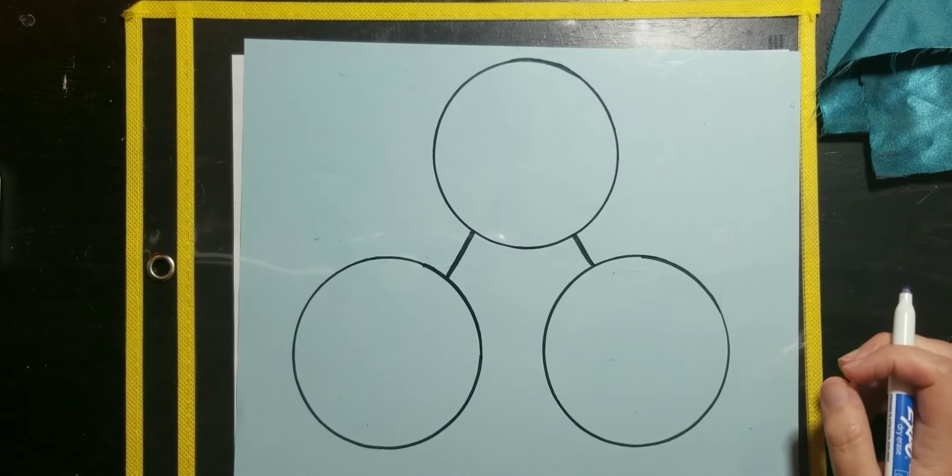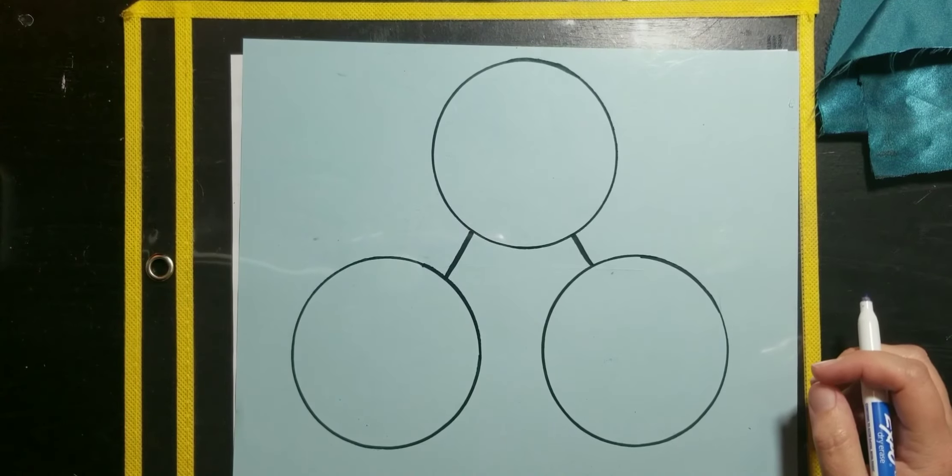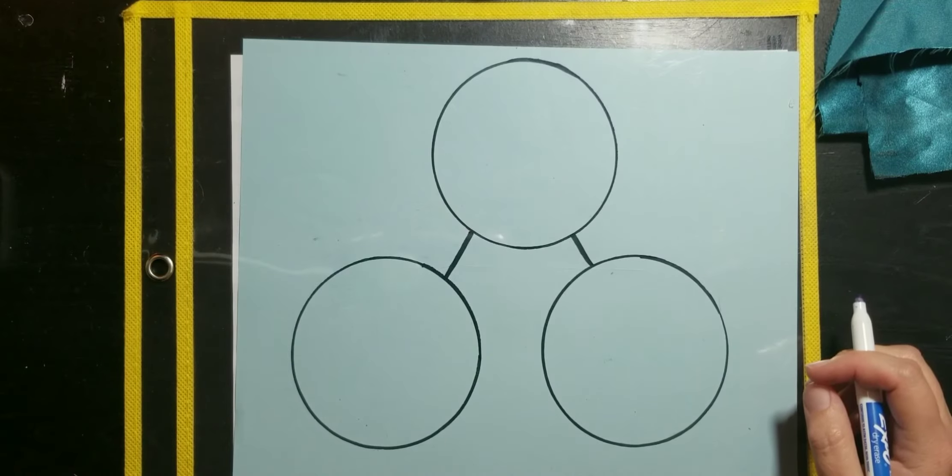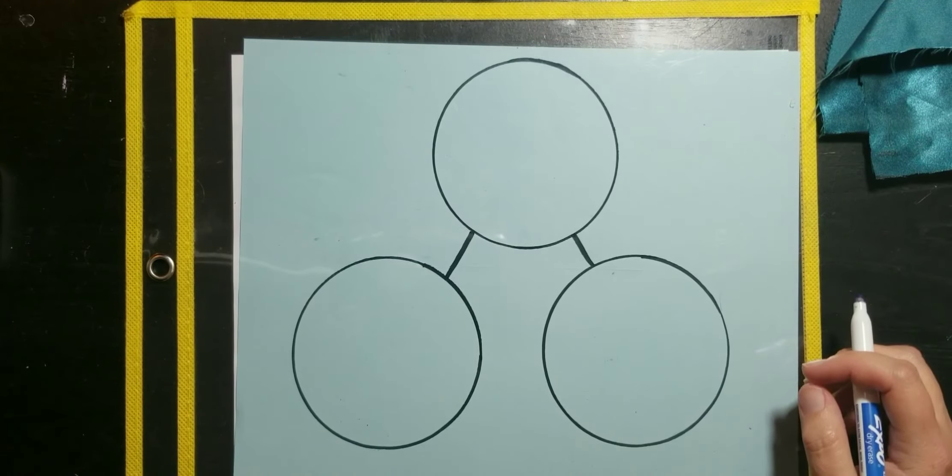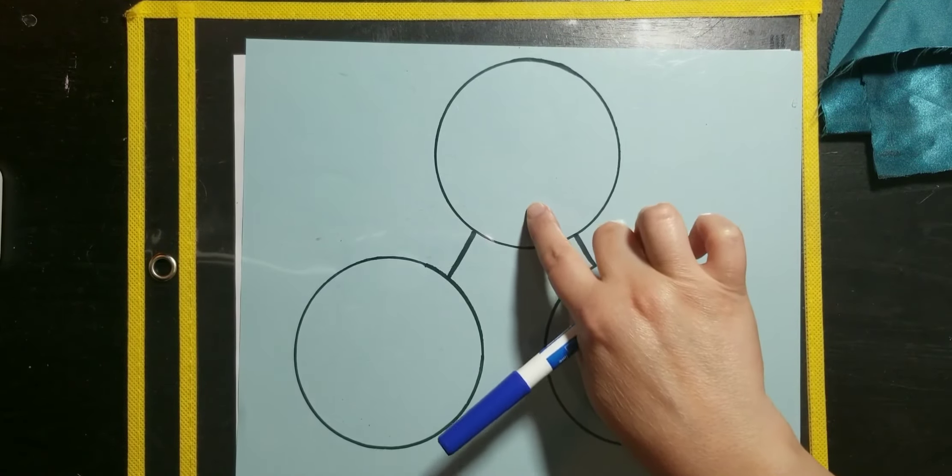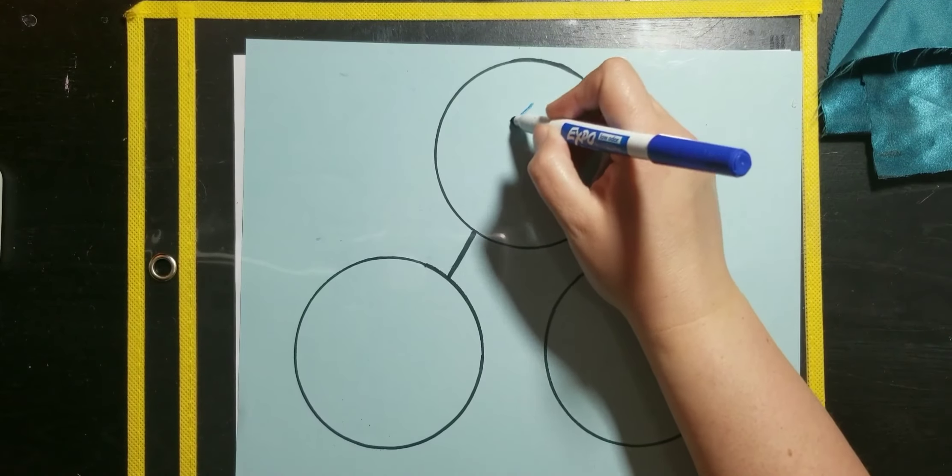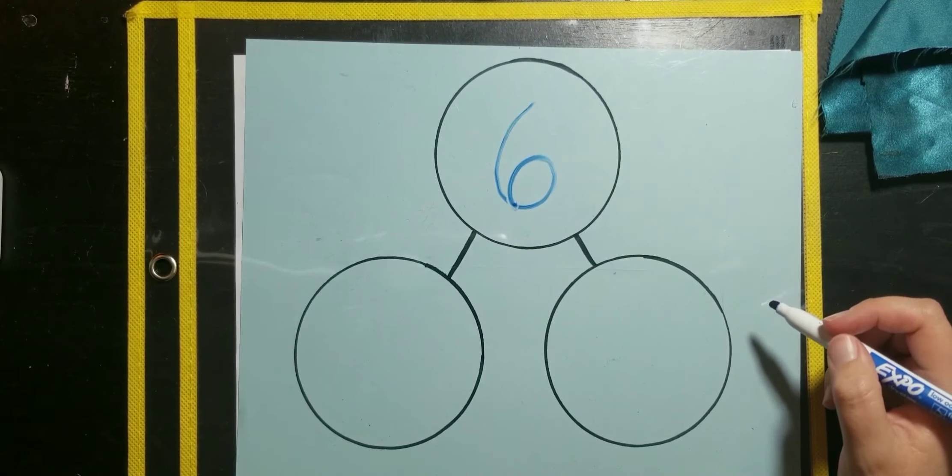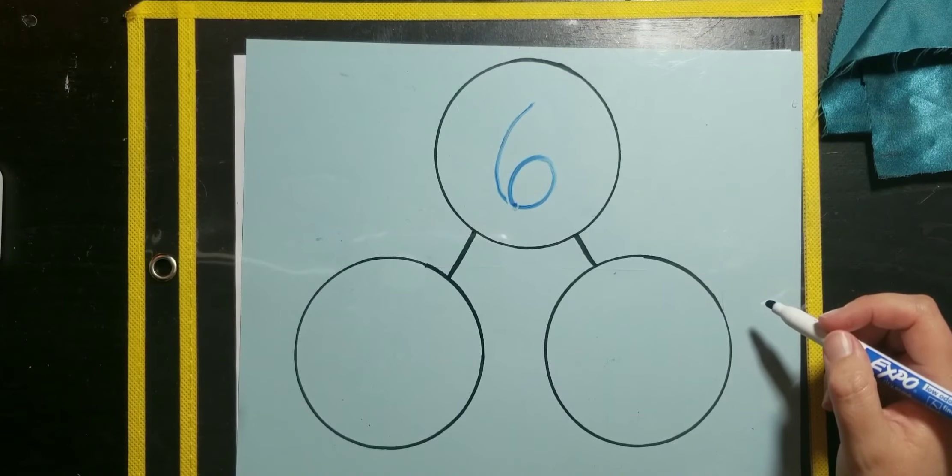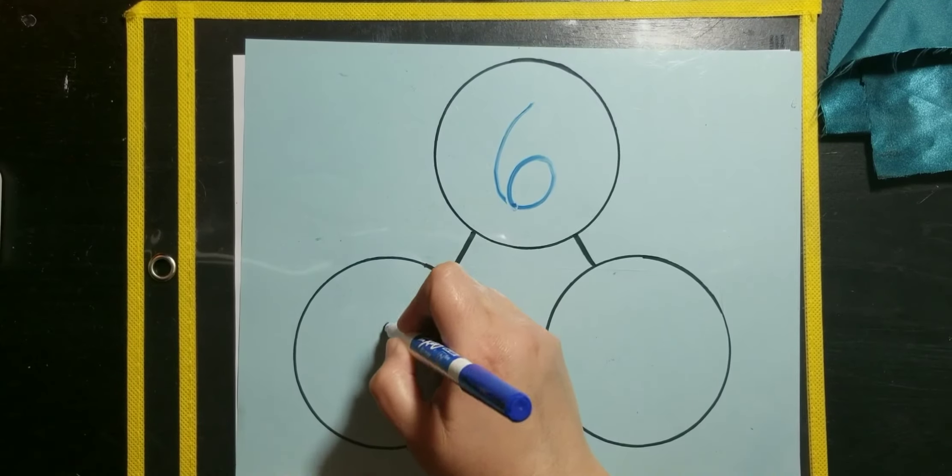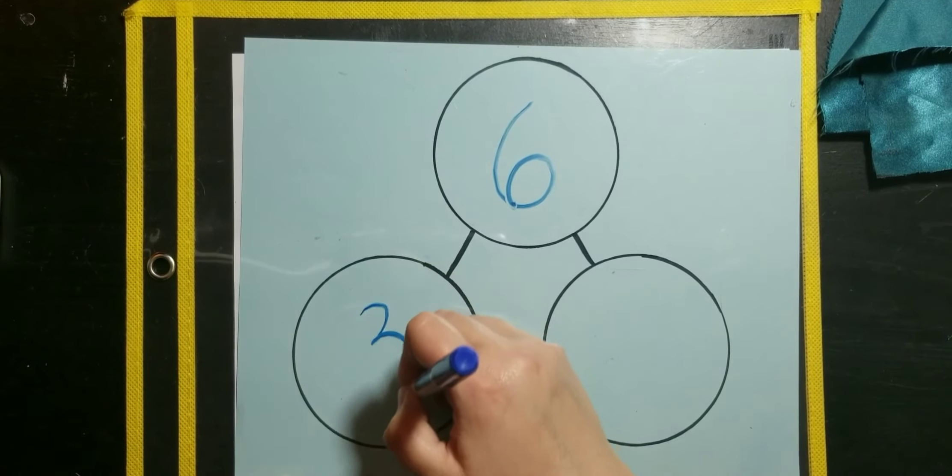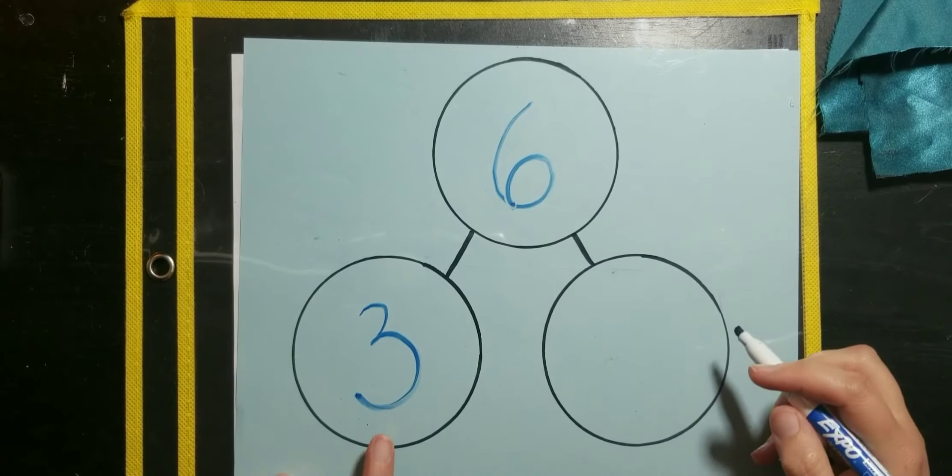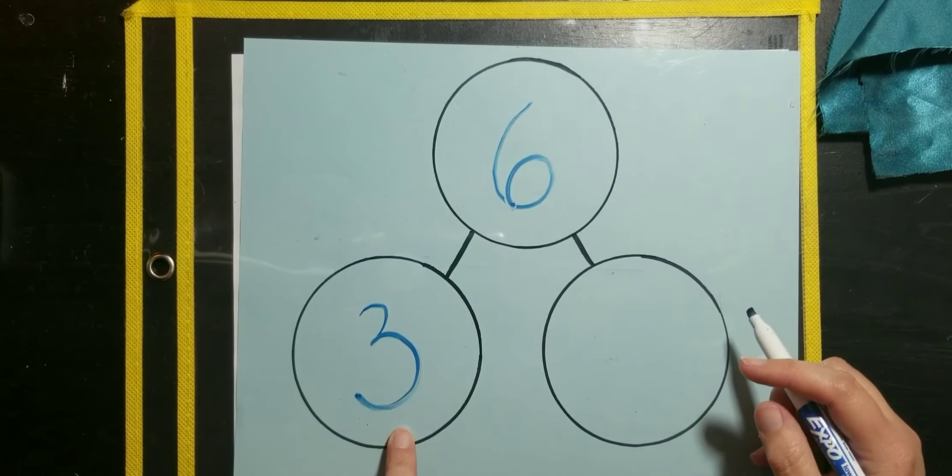All right, listen again. And we're going to write the numbers where they go. So, first, I told you that Ashlyn has six butterfly hair bows. That means she has six all together. That is the whole amount that she has. So, I'm going to write that in the whole circle there. She has six total butterfly hair bows. Three of them are yellow. So, I'm going to write a three in this part because we know that that's one of our parts. Three are yellow.